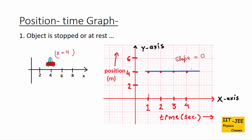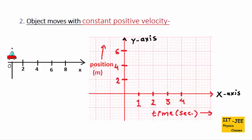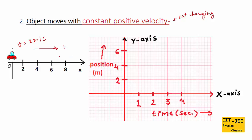The next case is an object moving with constant positive velocity. Constant velocity means velocity is not changing. Suppose the velocity of this car is v = 2 meters per second and it is constant. Positive velocity means the object is moving in the positive direction — towards east, towards the positive x axis, or towards the right. These are all positive directions. So if the object moves in the positive direction, it has a positive velocity, shown by the positive sign.